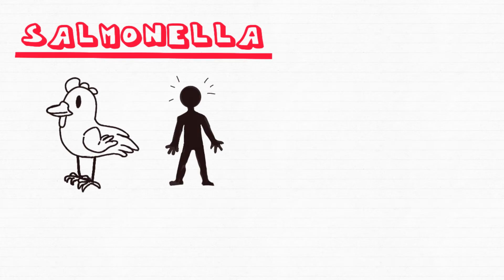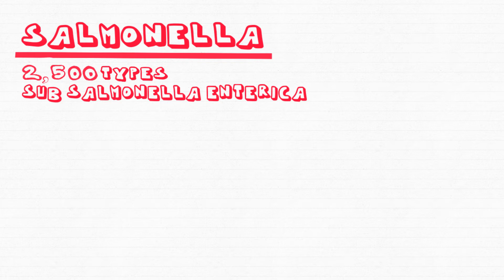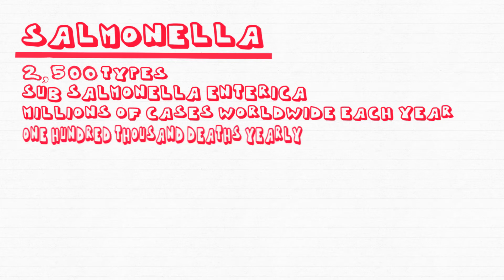Salmonella is a bacteria that can infect animals and humans. Salmonella belongs to a group called gram-negative bacteria. They're shaped like rods and can have flagella to help them move around. There are over 2,500 different types of bacteria. Most human diseases are caused by bacteria belonging to the subspecies called Salmonella enterica. It's estimated that tens of millions of human cases occur worldwide every year, causing over 100,000 deaths.